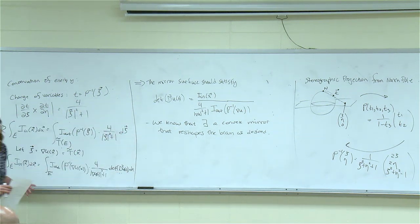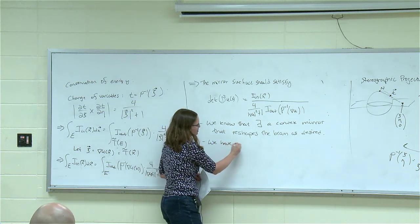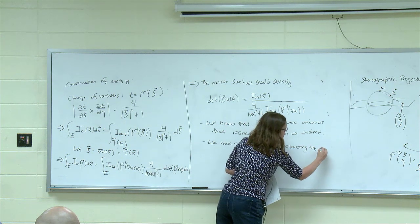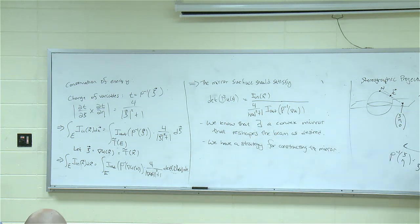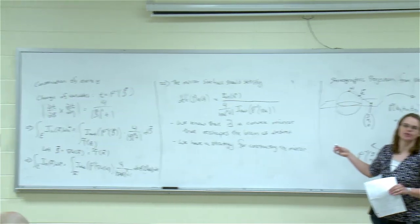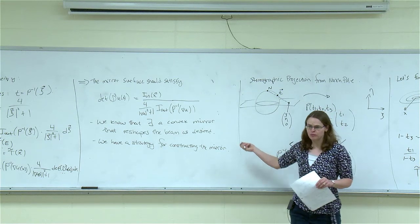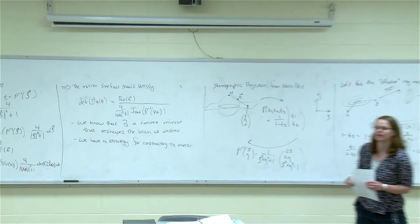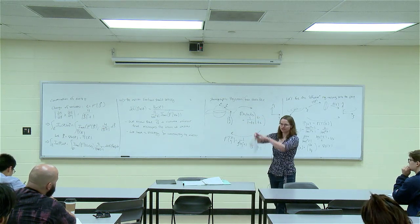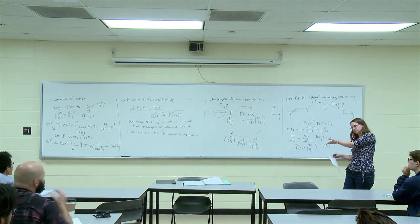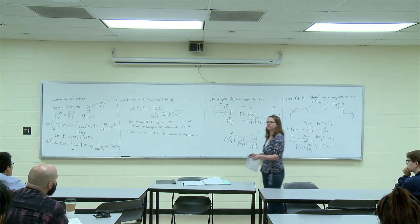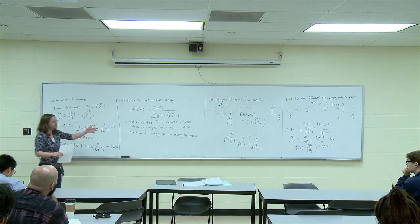Now we know that there exists a convex mirror that reshapes the beam as we want. We get well-posedness of the problem and a strategy for constructing the mirror, assuming we can solve the Monge-Ampère equation — not a small assumption, but a direct strategy. This actually works in practice. Together with an optics lab in Arizona, we ran Monge-Ampère code to build a system of lenses to transform a beam into a triangular shape. They solved the equation, it popped out what the lenses should look like, they built them, and it worked — you pass a laser beam through and get a triangle.